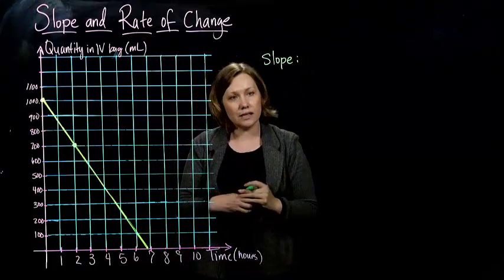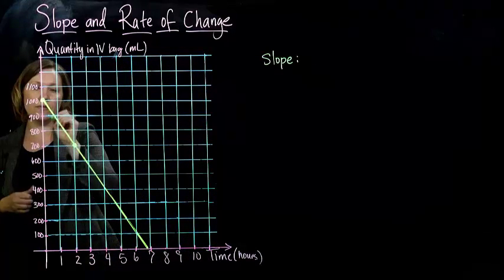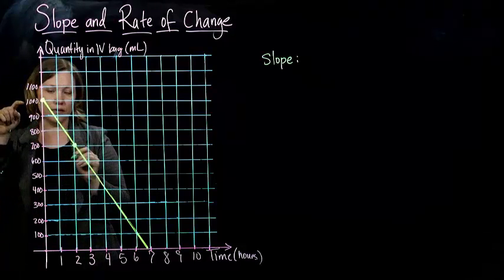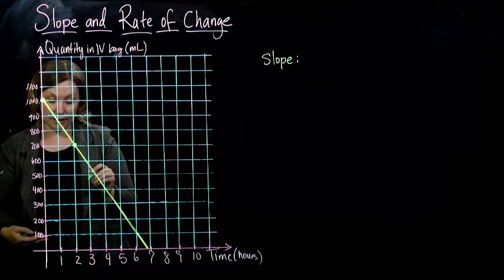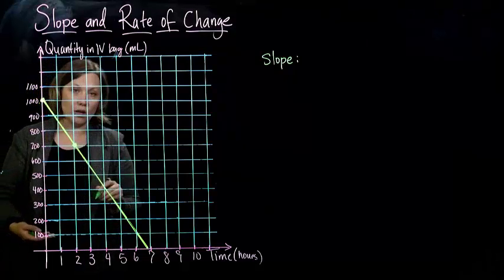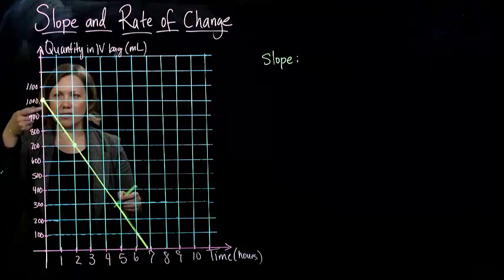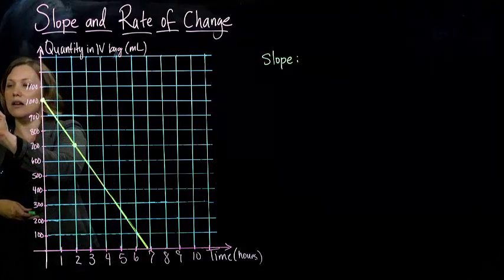So if I want to find the slope, it's the same thing. So I'm going to start at, this is 1,000. And if you'll notice, this graph has a little bit different scale. Our last graph had 1, 2, 3, 4. This one is going by hundreds, which makes sense. 100 milliliters at a time since there are 1,000 milliliters in that IV bag.